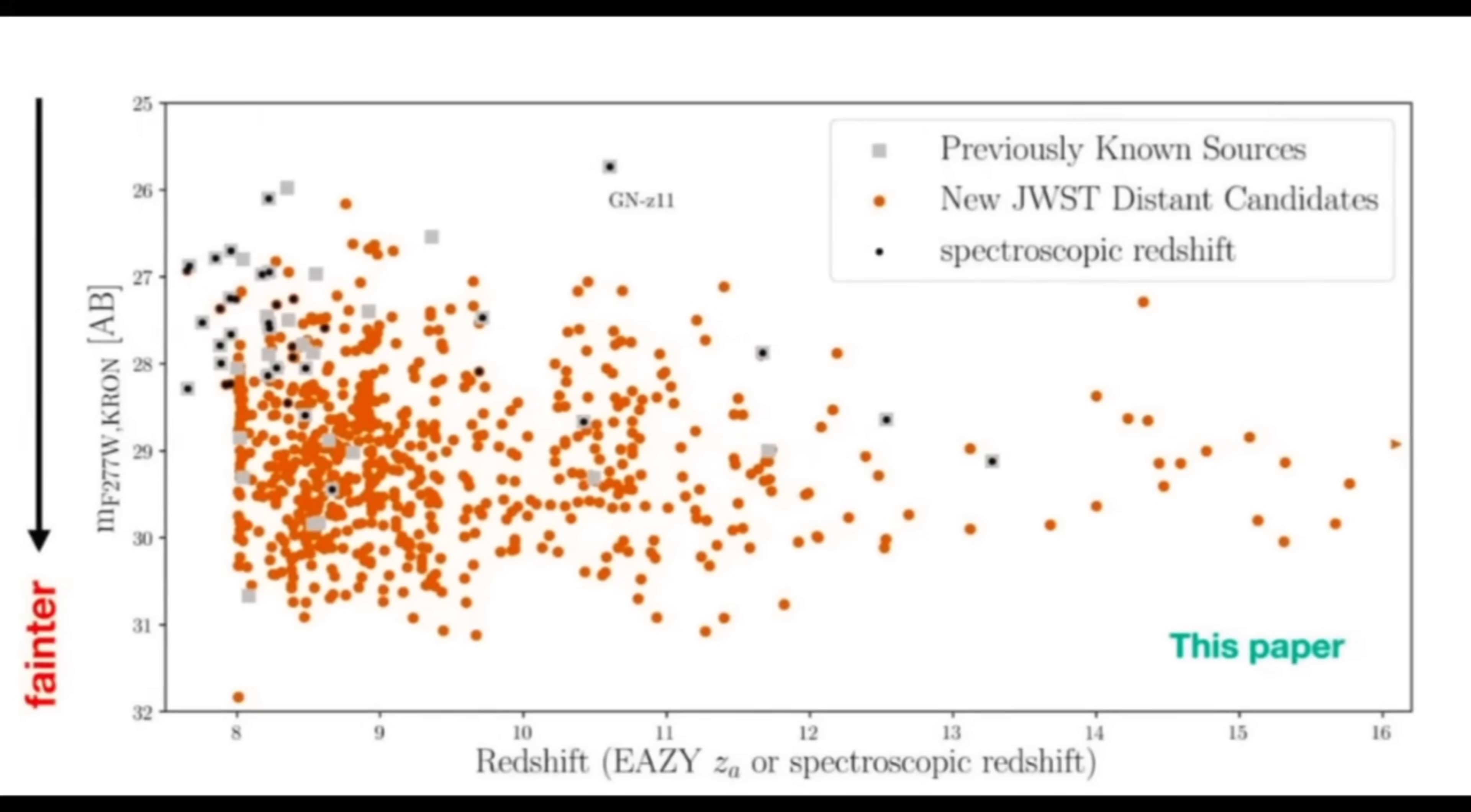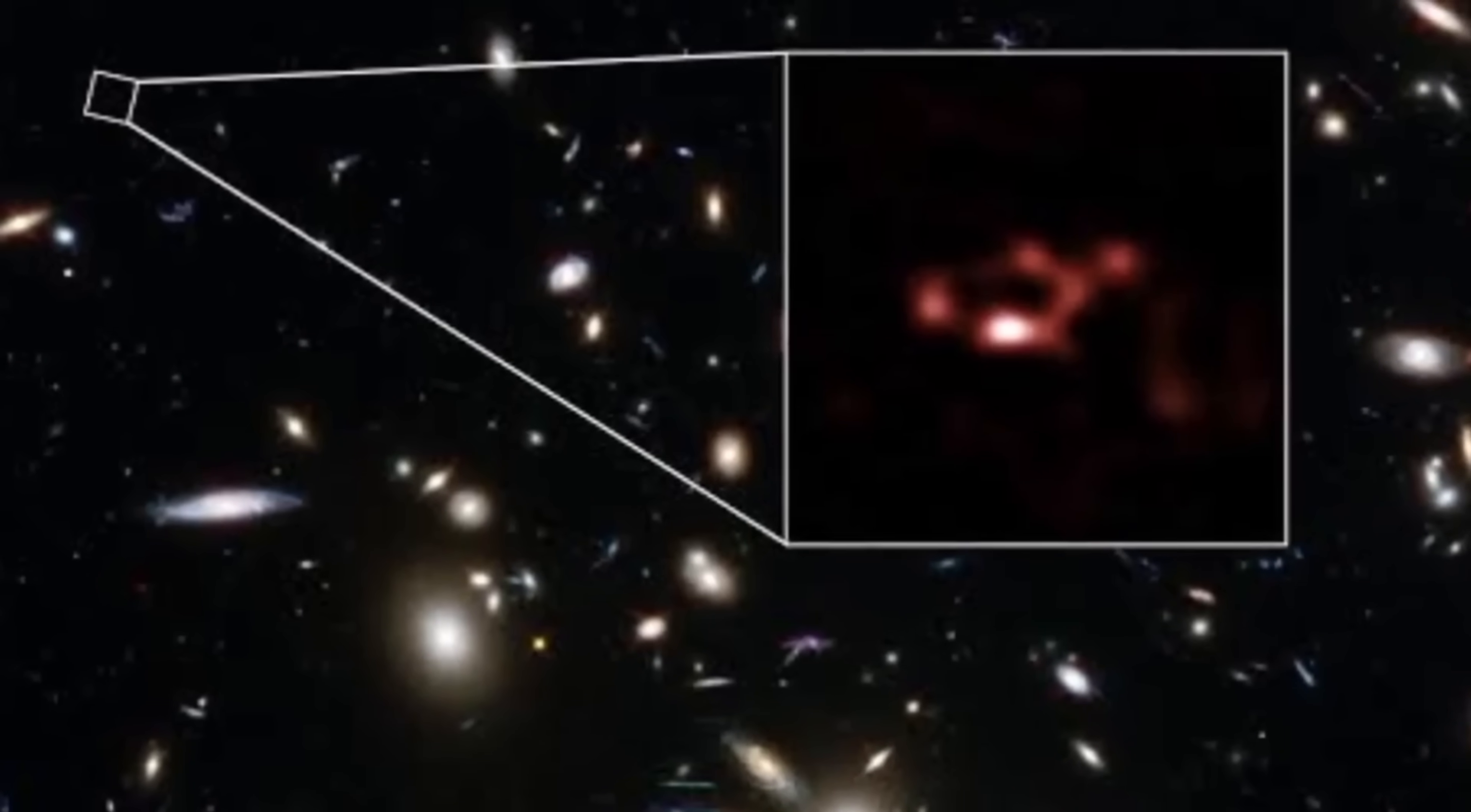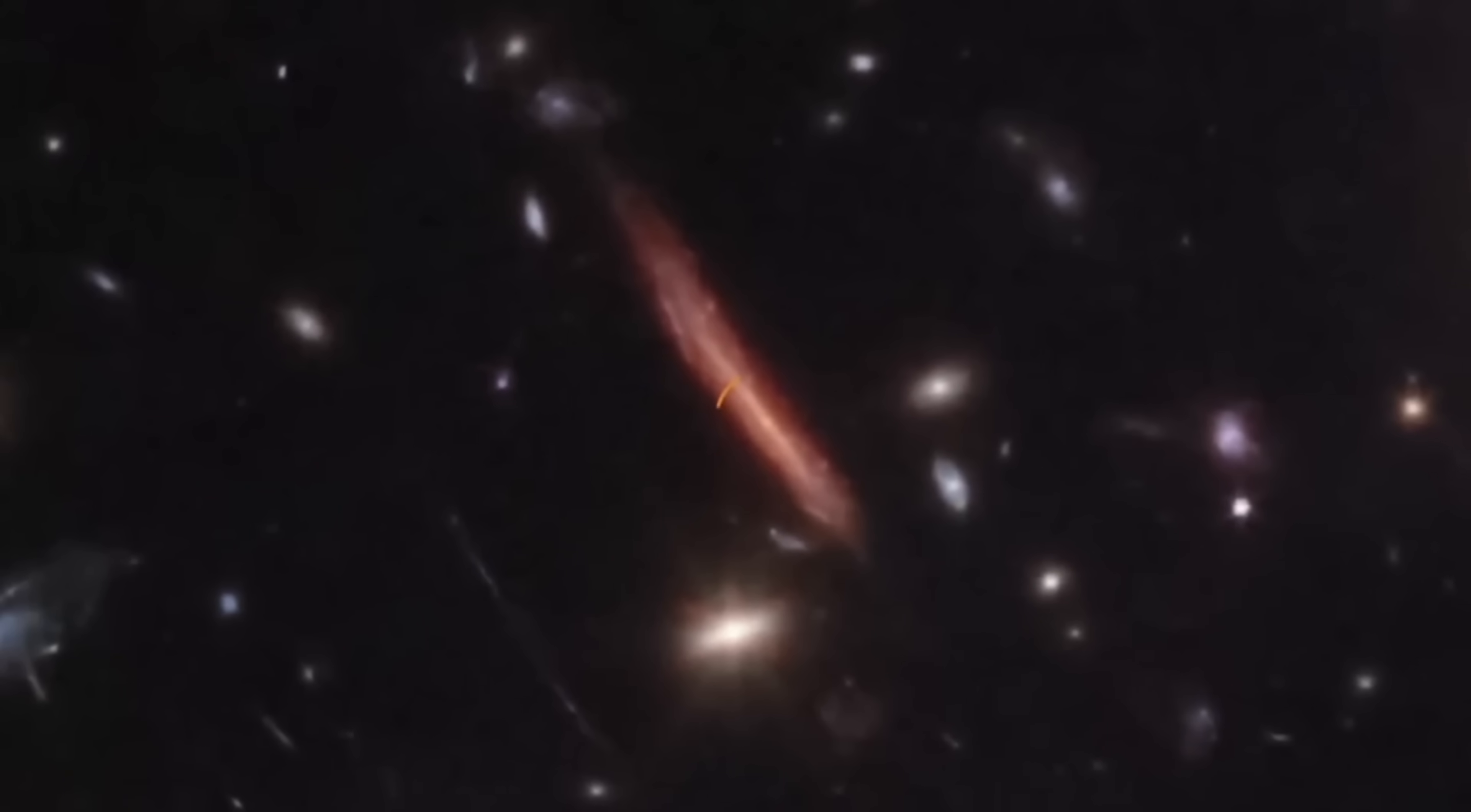However, there are other galaxy candidates with Redshifts up to 16. If confirmed, these galaxies would challenge our standard cosmological models, which describe how the universe formed and evolved. Spectroscopic confirmation is still needed for these extreme cases.